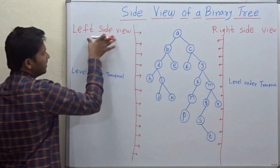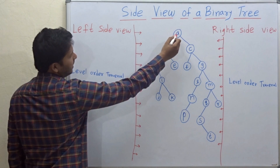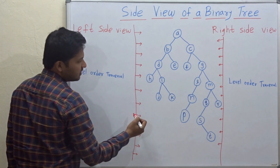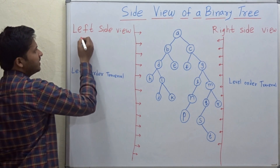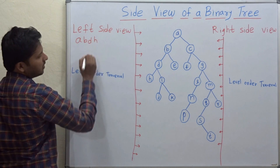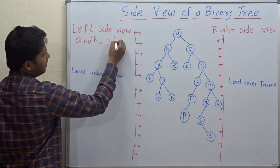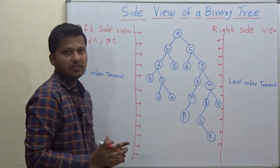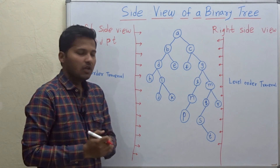The left side view of this binary tree is A, B, D, H, then J is visible from the left side, then P and T. So the left side view is A, B, D, H, J, P, and T. Now let's see what the algorithm is for printing the left side view of a binary tree.